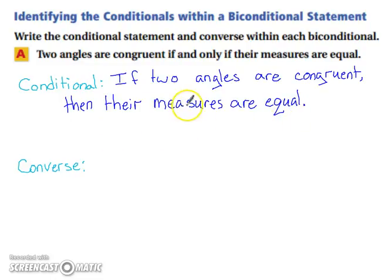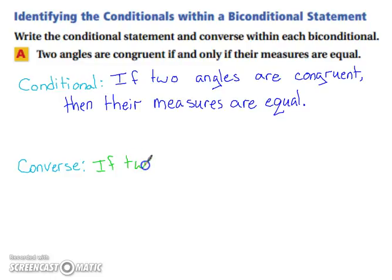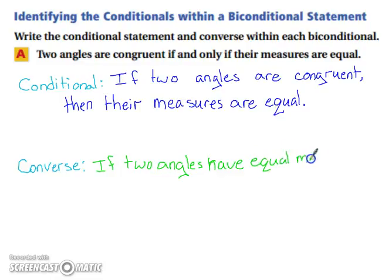For our converse, we're going to switch our hypothesis and conclusion. Keep in mind, you don't want to put 'there' at the front of the sentence and then later specify what it referred to — you should generally specify it first. So: if two angles have equal measures, then they are congruent.